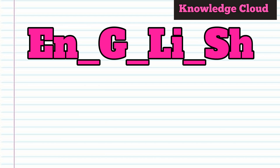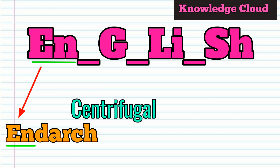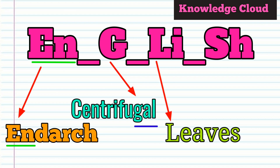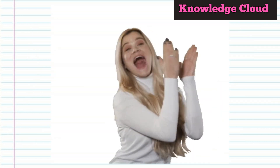In the word ENGLISH, relate EN to endarch — the first two letters of endarch are also EN. So EN helps you remember endarch. Then from the G in ENGLISH, you relate it to centrifugal — the endarch arrangement is a centrifugal arrangement. So the simple word ENGLISH helps you remember: EN = endarch, G = centrifugal.